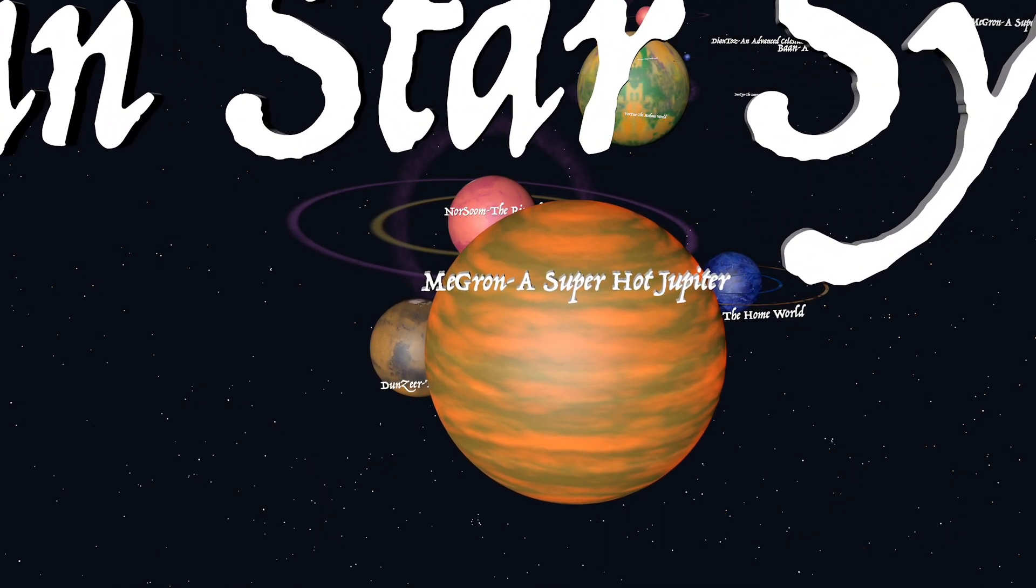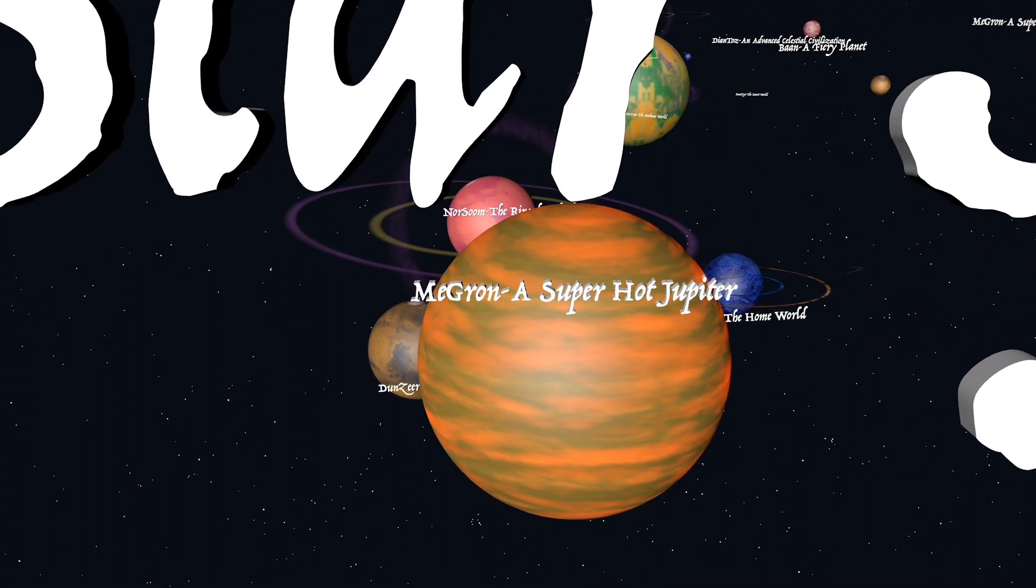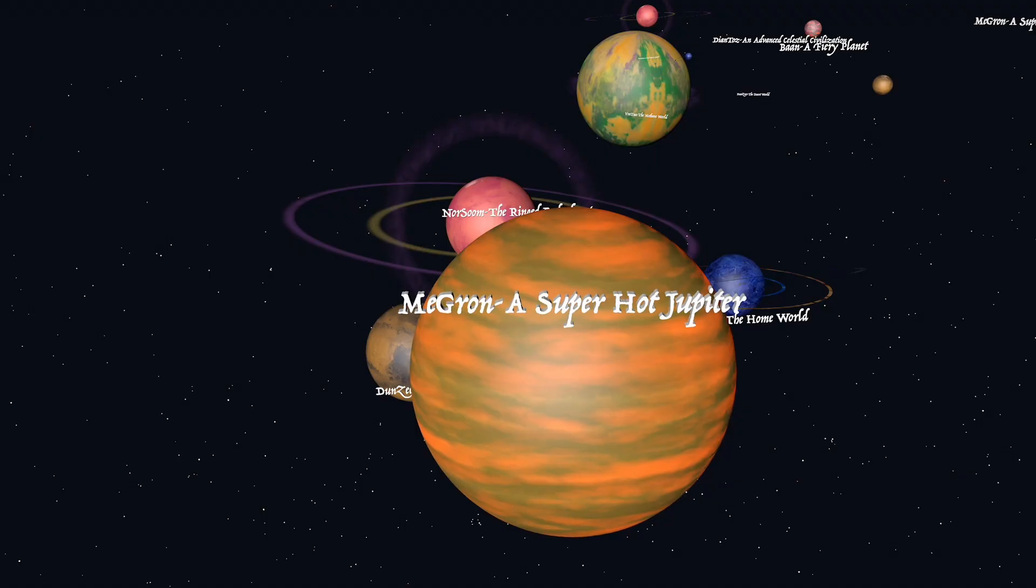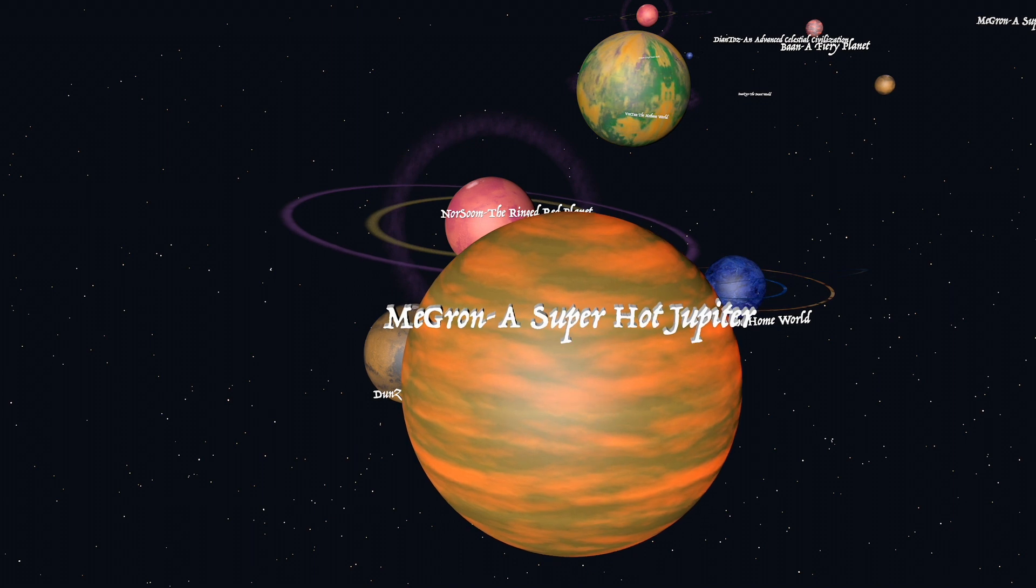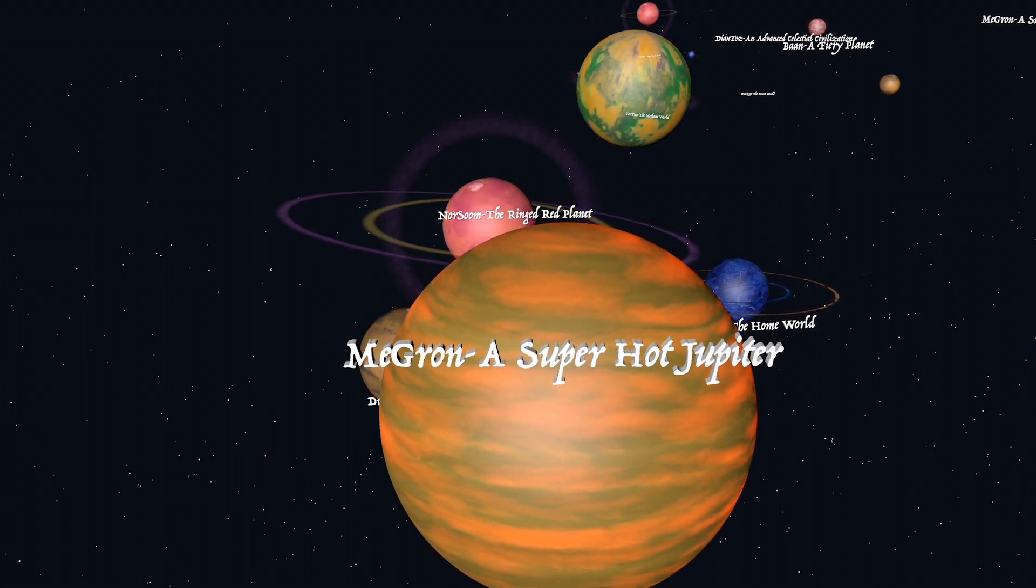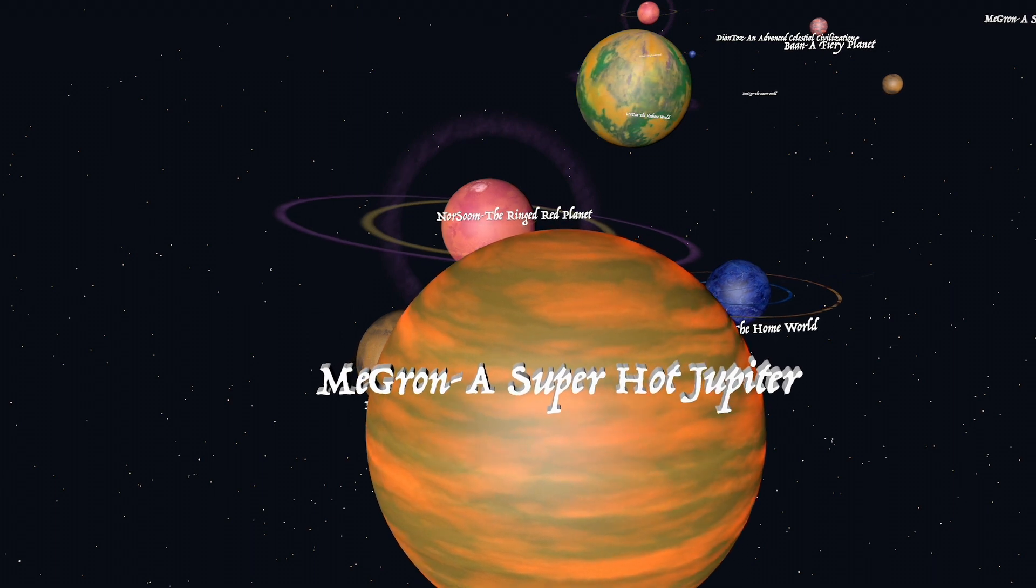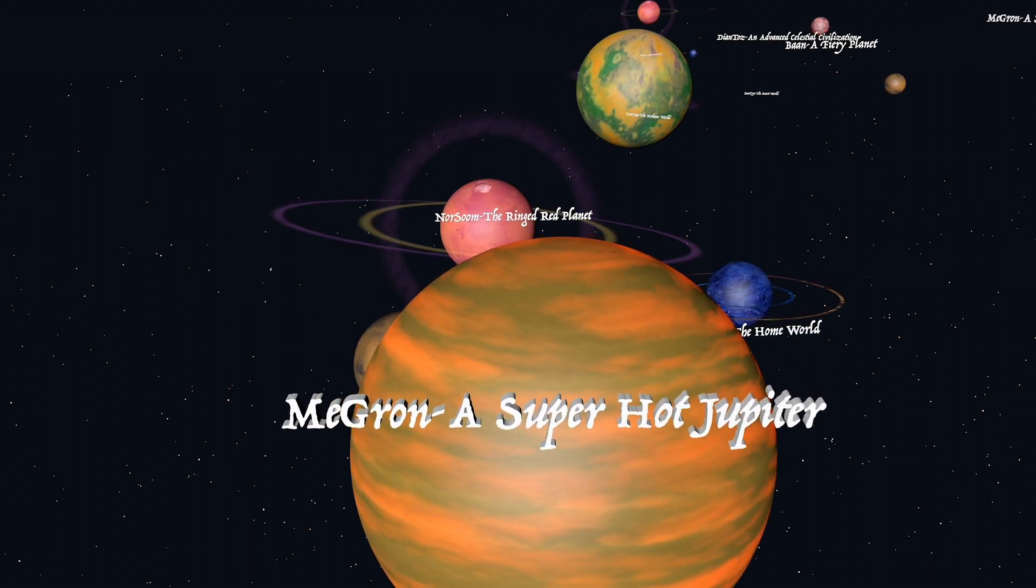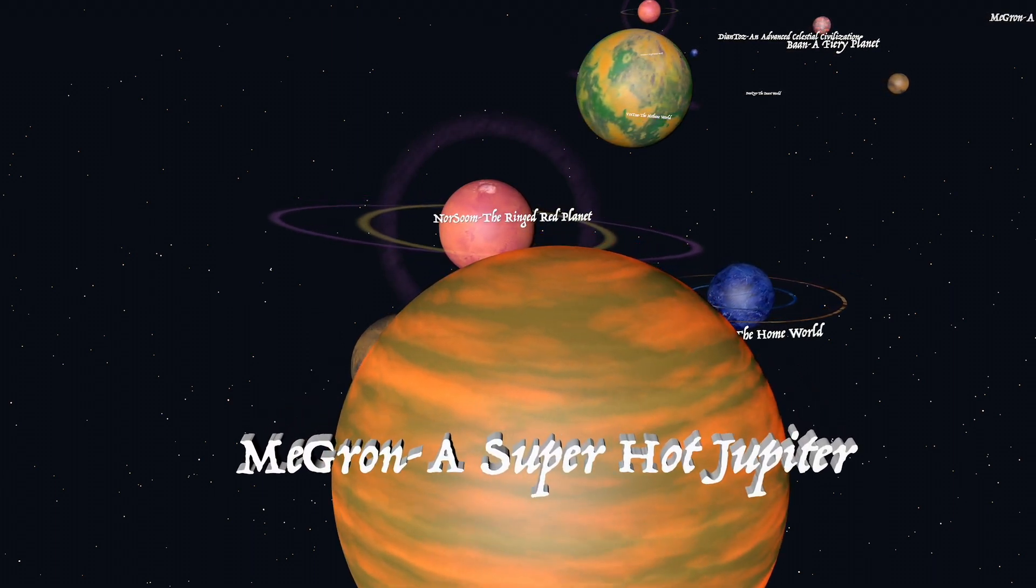Megron is the first planet in the Sovran star system and is a hot gas giant that orbits in close proximity to our Sun. It only takes 10 days for Megron to circle Sovran. Megron has an extreme seasonal atmosphere due to the planet's close orbit.